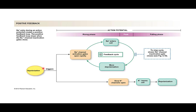The positive feedback loop works like this: we trigger depolarization, sodium comes in, and as sodium enters the cell we further depolarize, opening up more channels. What stops this is the inactivation gate closing and the slow potassium channels opening, allowing potassium to leave the cell, which allows us to repolarize.